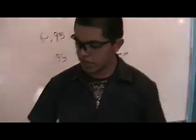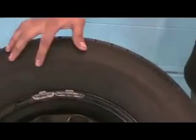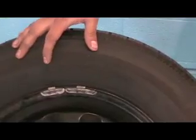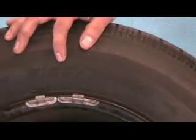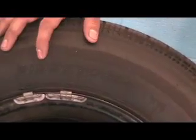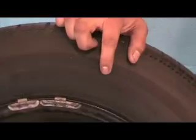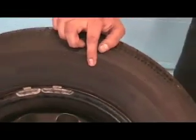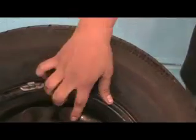So the numbers on the tire are P19570R14: P is for passenger car, 195 is the width in millimeters, 70 is 70% of the width which equals the height from the rim to the top of the tire, R stands for radial which is the type of tire, and 14 is the size of the rim.